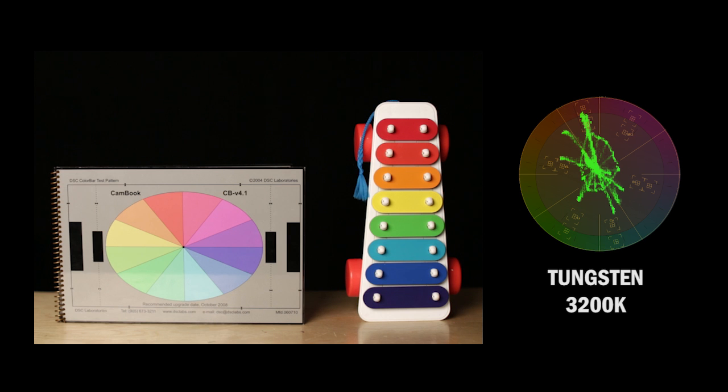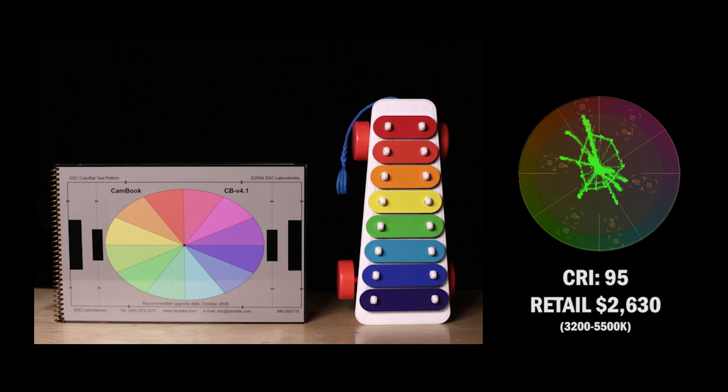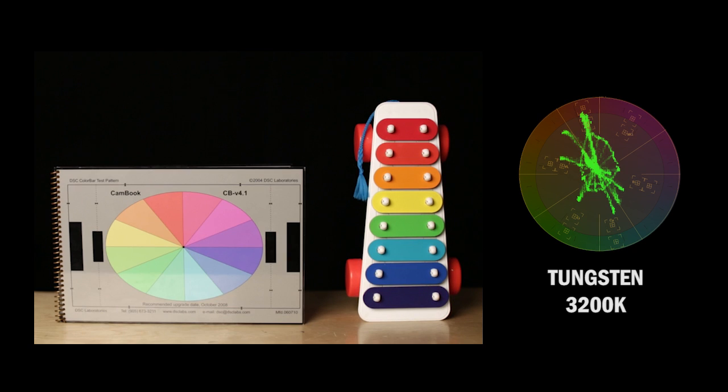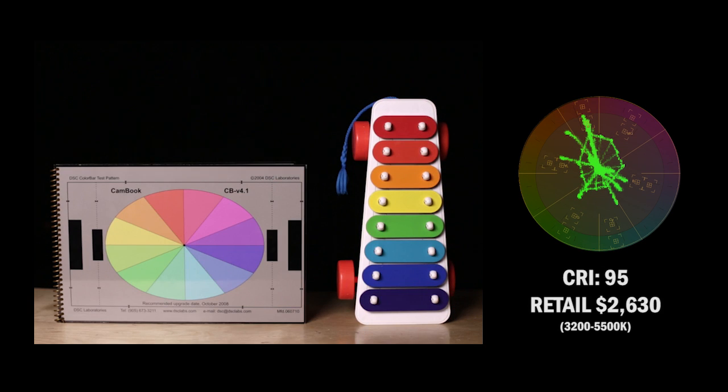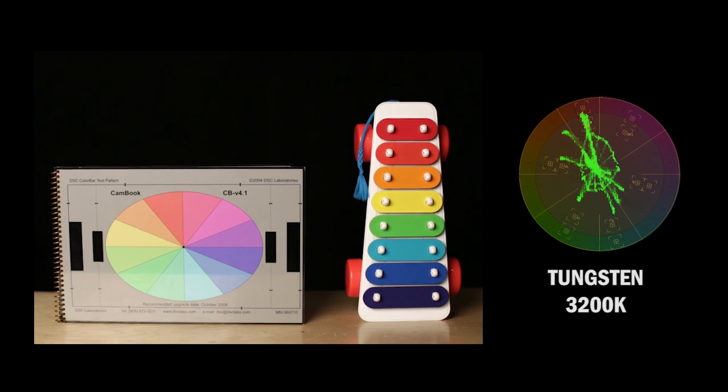So we're back to our tungsten light here. And let's go ahead and move forward to a CRI rating of 95. So let's go tungsten and then our 95 CRI rating. Now you can see here, there's not as much of a shift in the hue here of the vector.